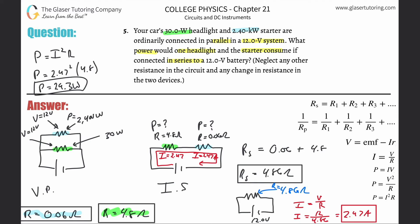For the blue resistor (starter, 0.06 ohms): P = I²R = 2.47² × 0.06, which gives approximately 0.366 watts. That's a significant drop — much less power consumed.